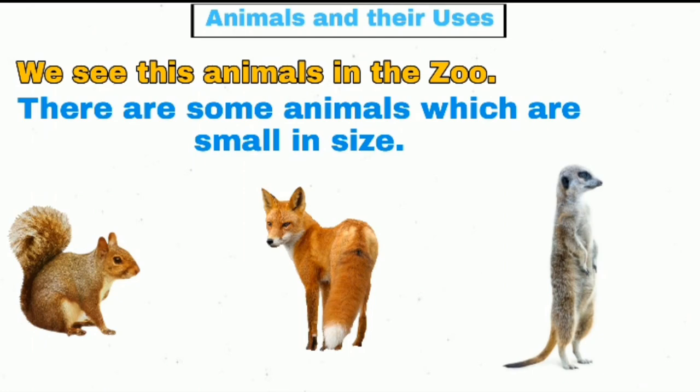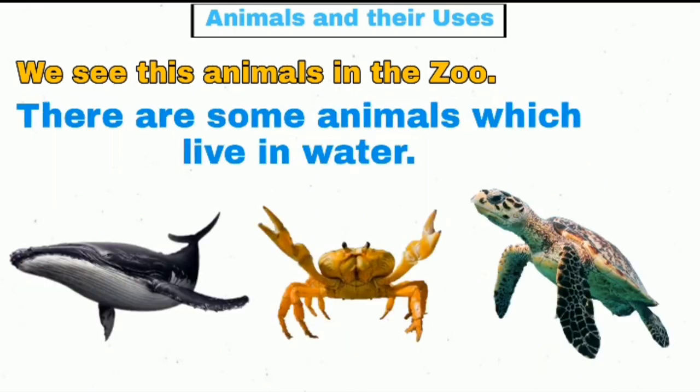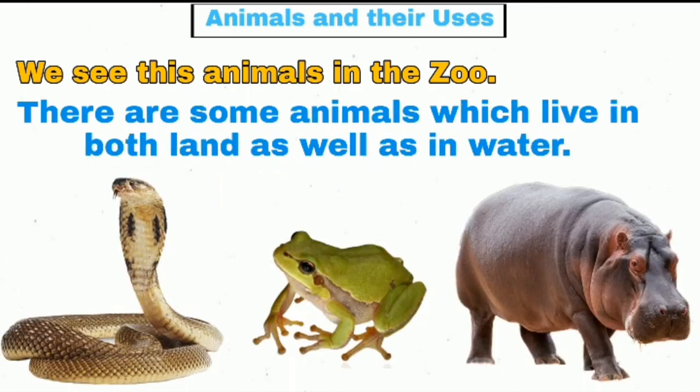There are some animals which are small in size, like squirrel, fox, and mongoose, etc. There are some animals which live in water, like whale, crab, and turtle, etc. There are some animals which live in both land as well as in water, like snakes, frog, and hippopotamus, etc.